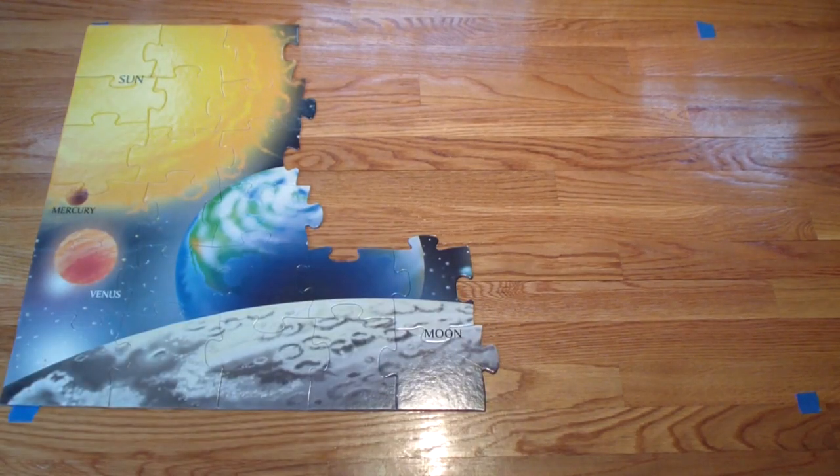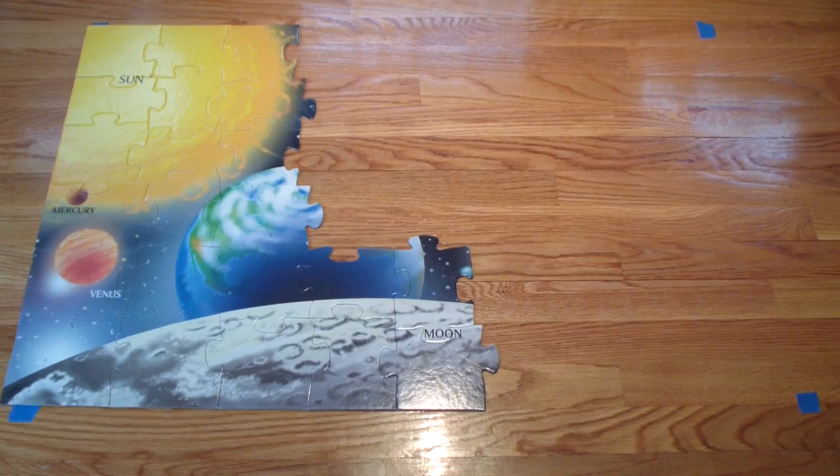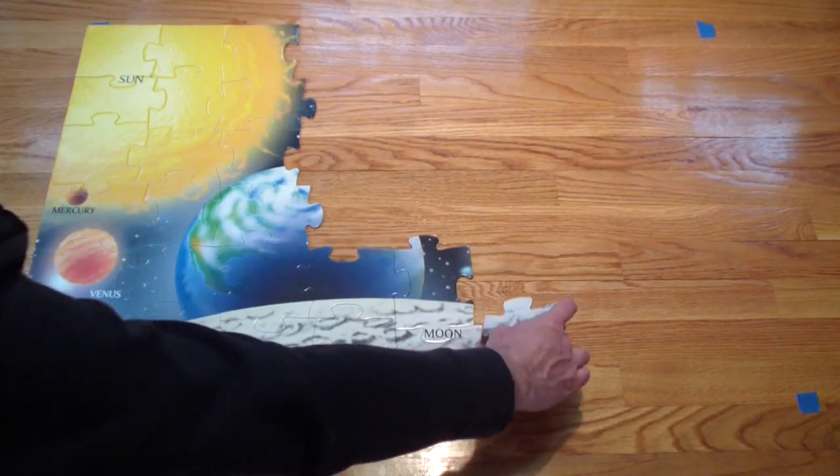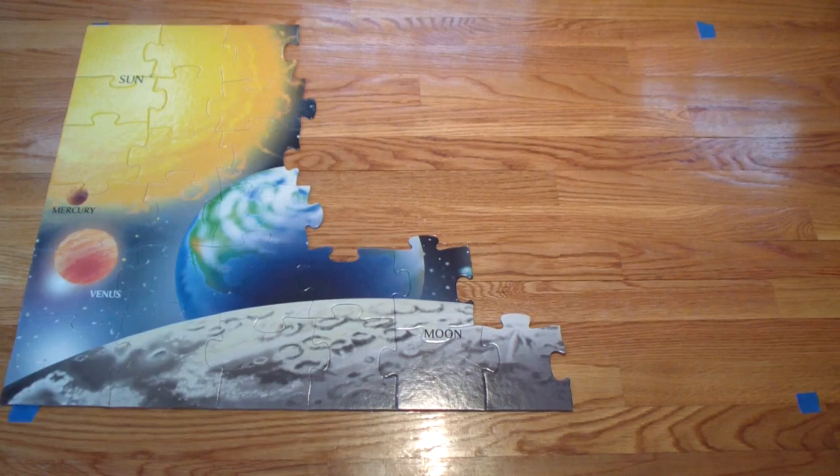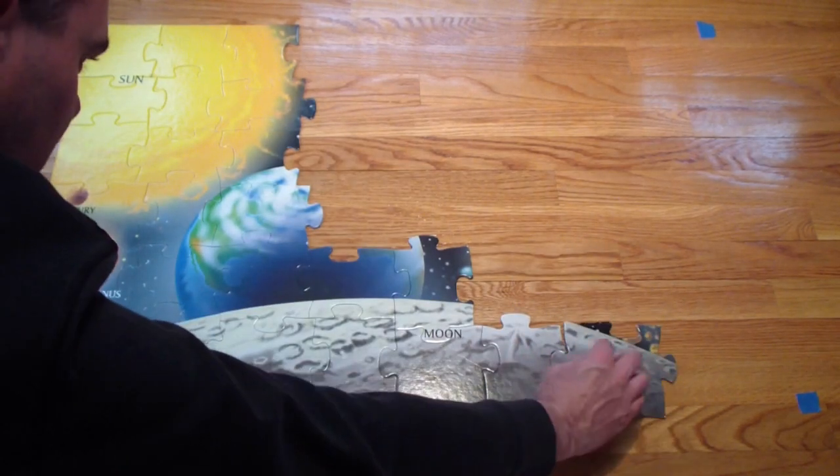And there we have the moon. The moon is the only celestial body that rotates around our planet Earth.